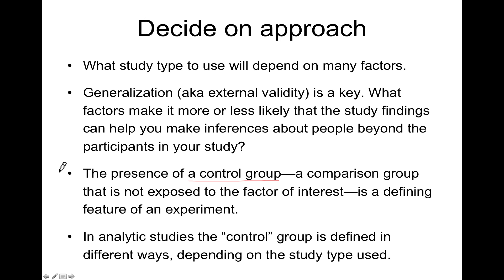Having a control group is very important and gives us a sense of whether a particular exposure or treatment actually causes changes we may see in the subjects to which it is given. In experimental studies, we always have a control group — we compare a group exposed to a given treatment or intervention to those who are not. In analytic studies, the control group may be defined in somewhat different ways depending on the type of study used, and we will discuss that later in the lectures.